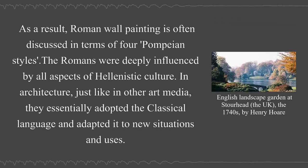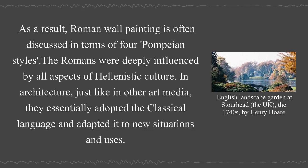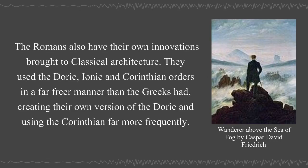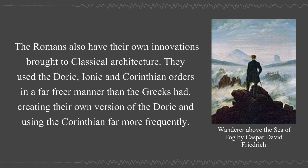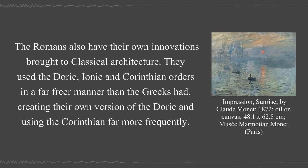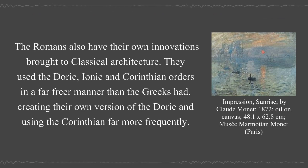The Romans were deeply influenced by all aspects of Hellenistic culture. In architecture, just like in other art media, they essentially adopted and adapted the classical language to new situations and uses. They used the Doric, Ionic, and Corinthian orders in a far freer manner than the Greeks had, creating their own version of the Doric and using the Corinthian far more frequently.